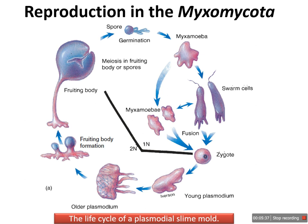As the myxamoeba feeds and grows, it will reproduce asexually by mitosis and cytokinesis. The myxamoeba stage may continue to proliferate for an indefinite period of time if nutrients and food are available in the environment and conditions are favorable. In most species, the myxamoeba stage may also vary according to the environment.